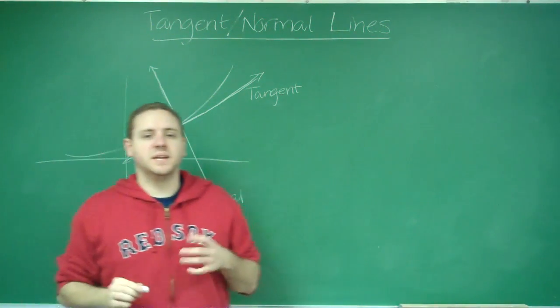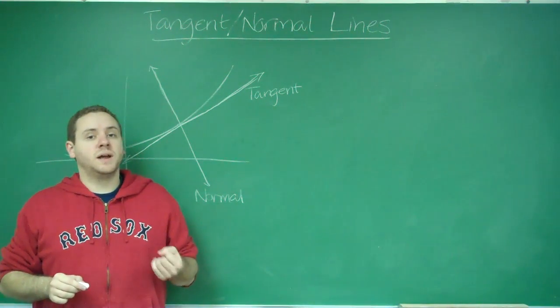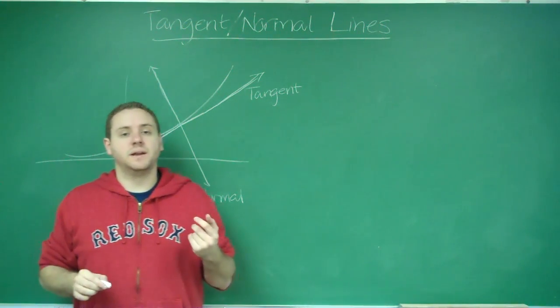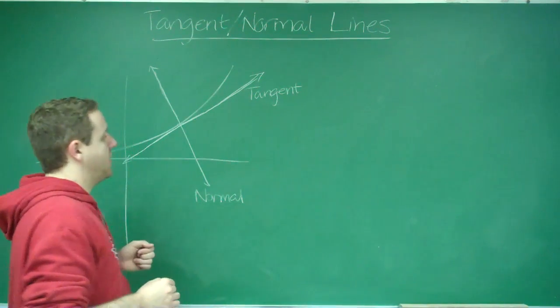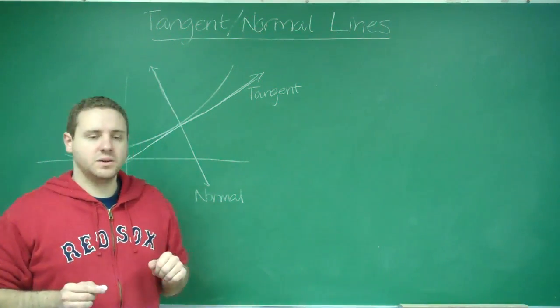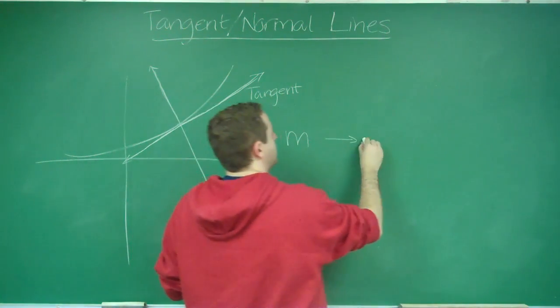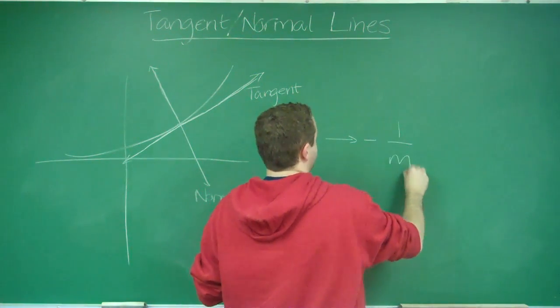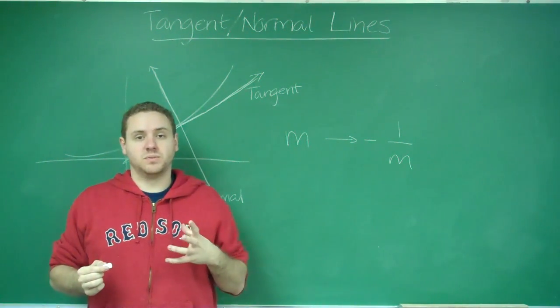If the derivative gives us the slope of the tangent line, to get the slope of the normal line, we just need to figure out what slope would be perpendicular to that slope. Remember that for two slopes to be perpendicular, if you have a slope m, perpendicular would be negative 1 over m, which is the negative reciprocal. So if you're looking for a normal line, you're going to do the negative reciprocal.